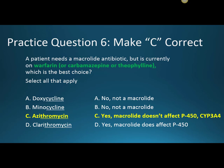Question six: a patient needs a macrolide antibiotic but is currently on warfarin, carbamazepine, or theophylline — which is the best choice? The answer is azithromycin. Erythromycin came first, clarithromycin second, and both affect the P450 system — though clarithromycin not as severely as erythromycin. Azithromycin was the breakthrough: once-daily dosing and no effect on the CYP3A4 isoenzyme, which is one of five isoenzymes integral to most drug interactions.